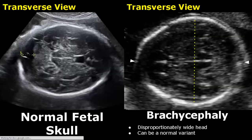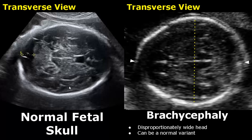Brachycephaly is a disproportionately wide head — the head is wider than usual, and this diameter is increased. It can be a normal variant or may be associated with some skeletal dysplasia.